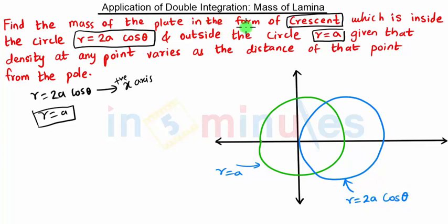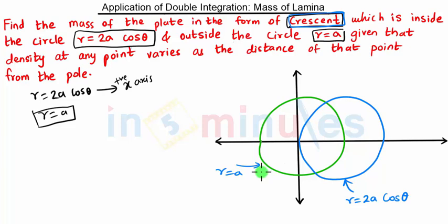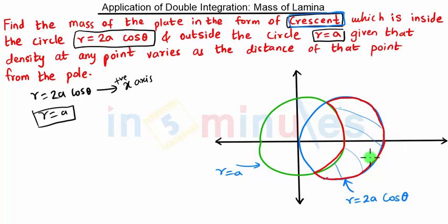We need to find the mass of the plate in the form of a crescent. A crescent is the shape of a moon. So we have to find the moon shape which is inside the circle r equal to 2a cos theta and outside the circle r equal to a. Inside this circle is one portion, and outside r equal to a gives us the crescent shape. This part is in the shape of the moon, that's why it is called a crescent. We have to find the mass of this area.